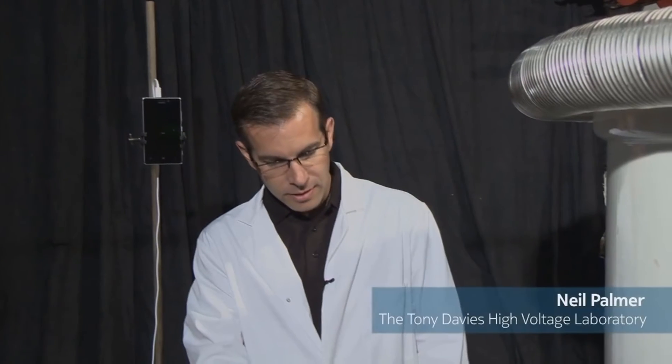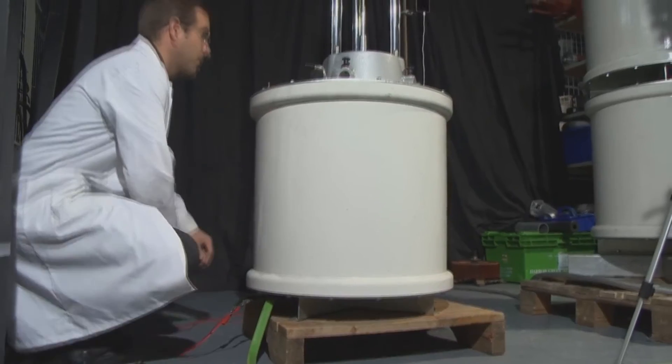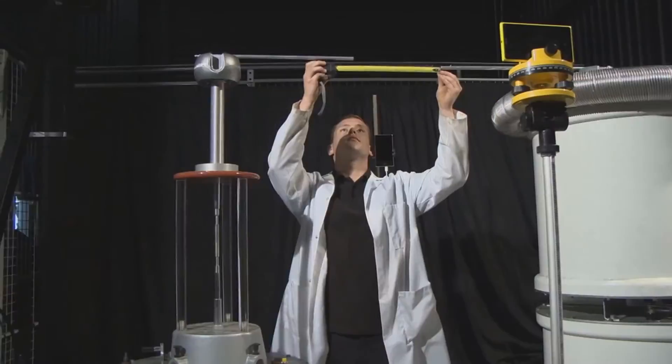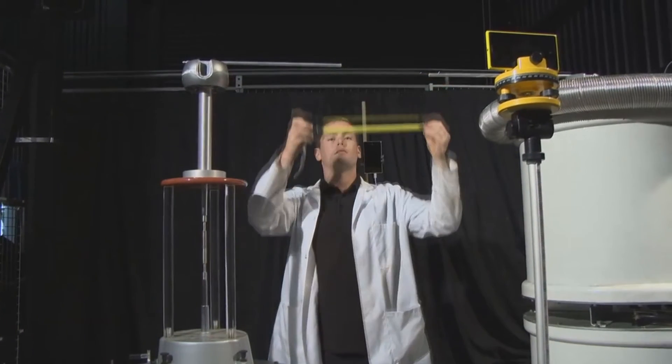We have mains voltage coming in at the bottom which is stepped up by this transformer to 200,000 volts, and we have an air gap which will have a discharge down through this transformer and then into the charging circuit of the phone.